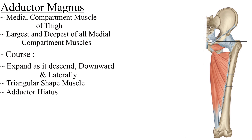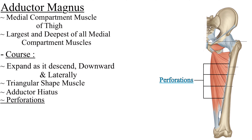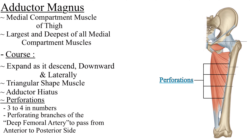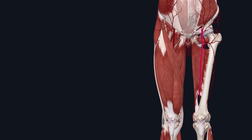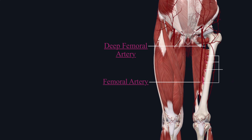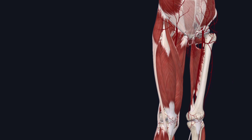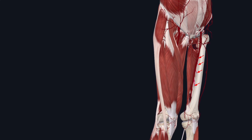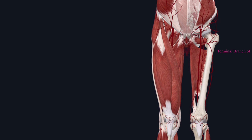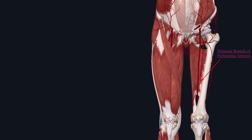Also notice these perforations in the adductor magnus muscle near its insertion. These perforations can be 3 to 4 in number and they allow perforating branches of the deep femoral artery to pass from the anterior to the posterior side of the thigh. From the femoral artery arises the deep femoral artery, and from the deep femoral artery arise these perforating arteries. They are called perforating arteries because they perforate the adductor magnus muscle. The terminal branch passes through the most inferior perforation.